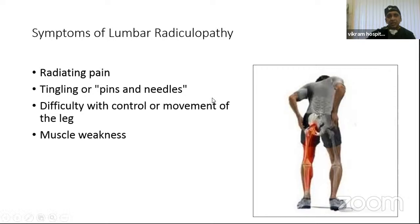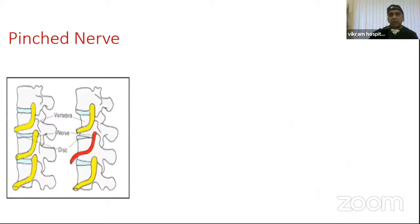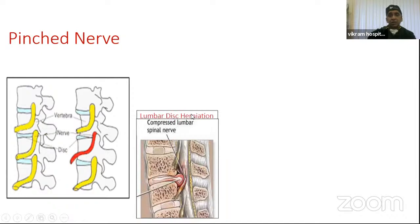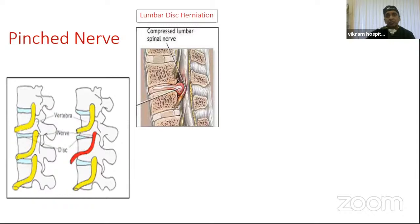The symptoms of lumbar radiculopathy are typically radiating pain with tingling or pins-and-needles feeling in the lower limb, with difficulty walking, lack of control, and muscle weakness. When there is a pinched nerve, it leads to inflammation of the nerve root. The commonest cause is lumbar disc herniation, with compression of the lumbar spinal nerve roots because of the disc bulging outwards and pressing on the nerve.